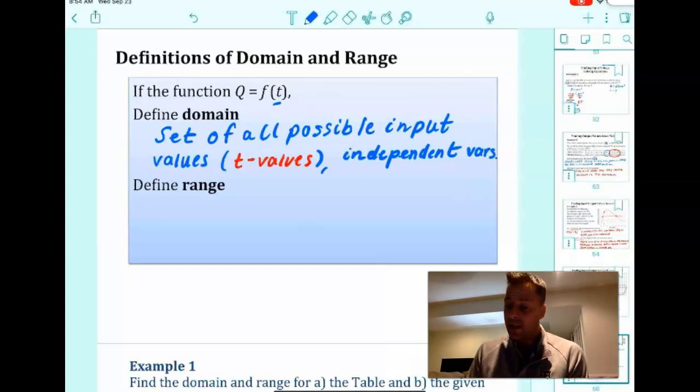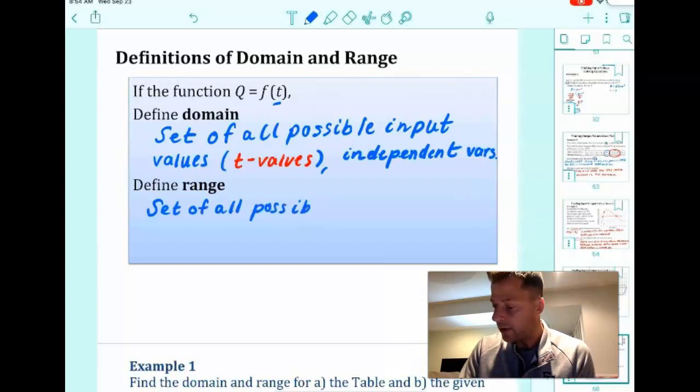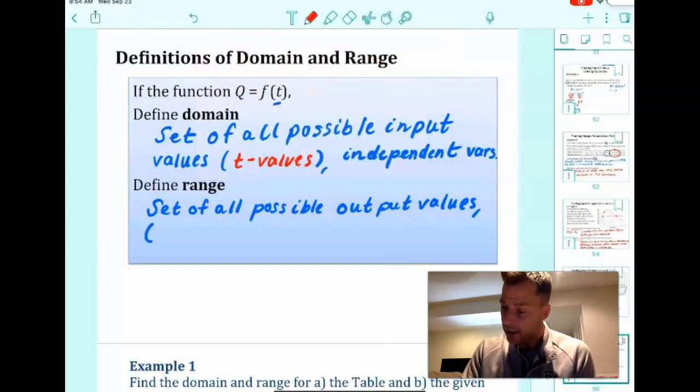The range is the set of all possible output values, right? Set of all possible outputs. So these would be our f(t) values, the y values, f(t) in this case.